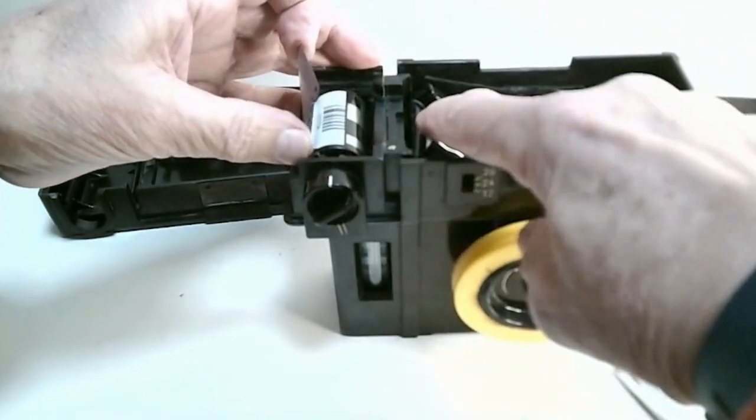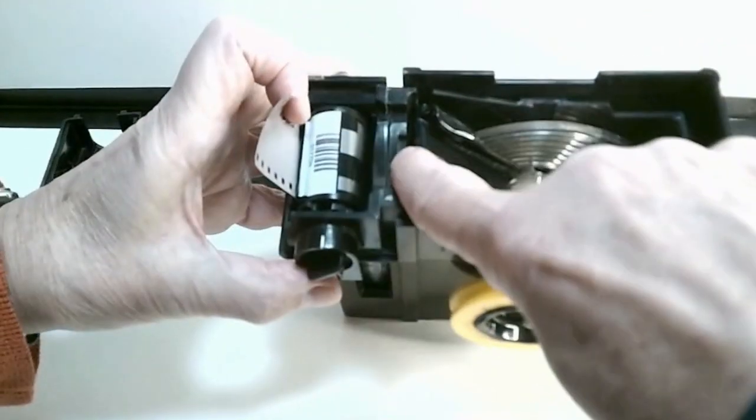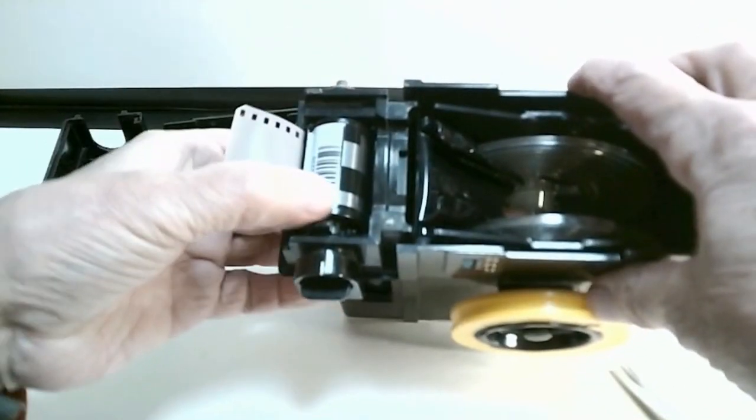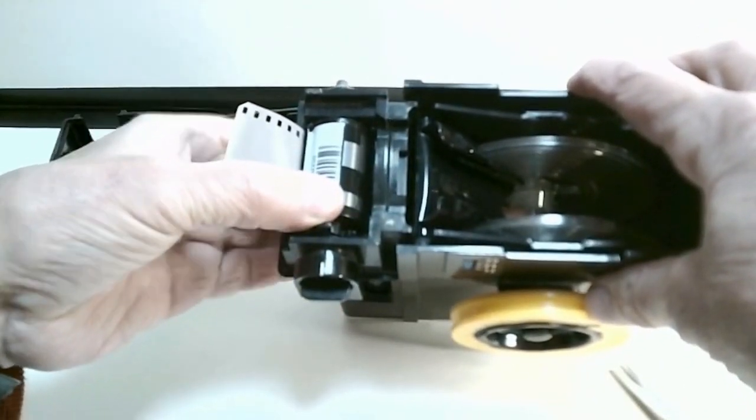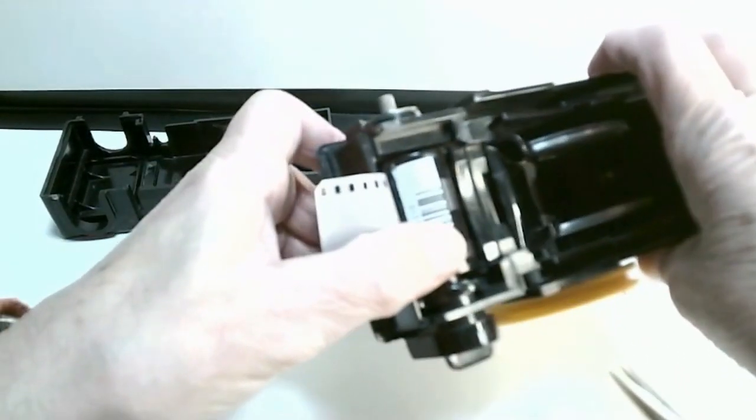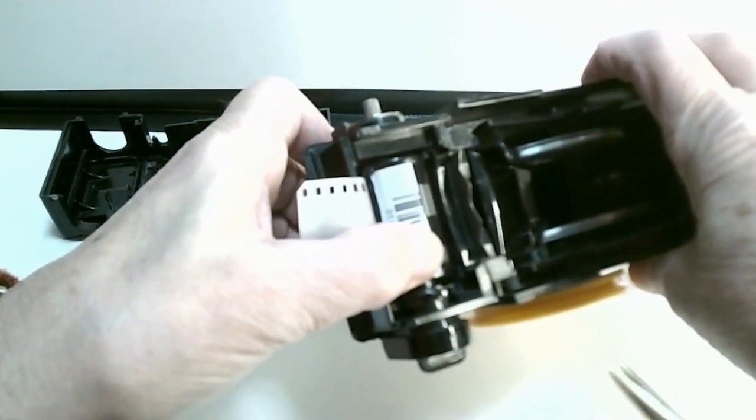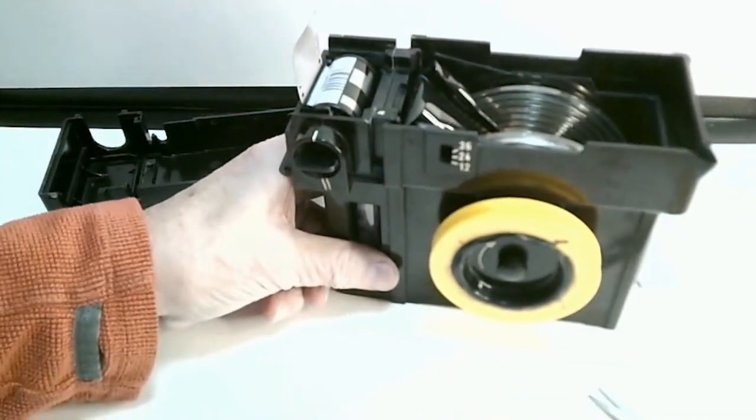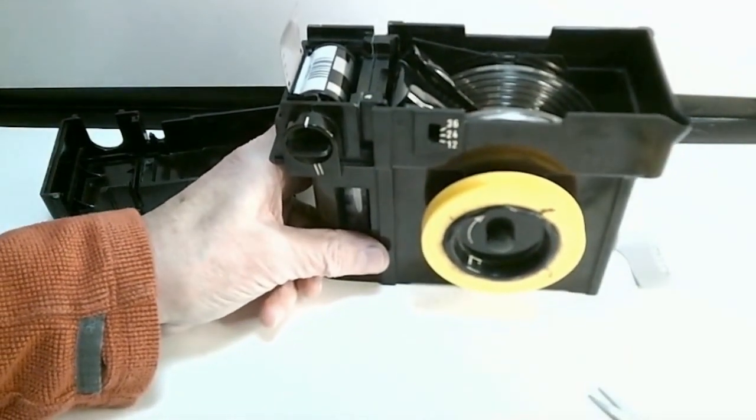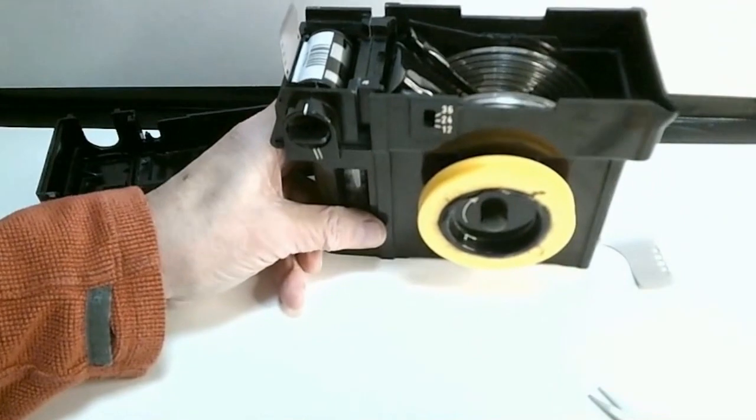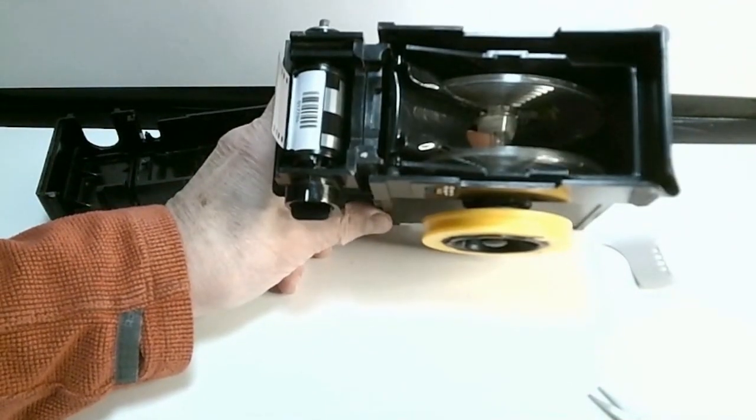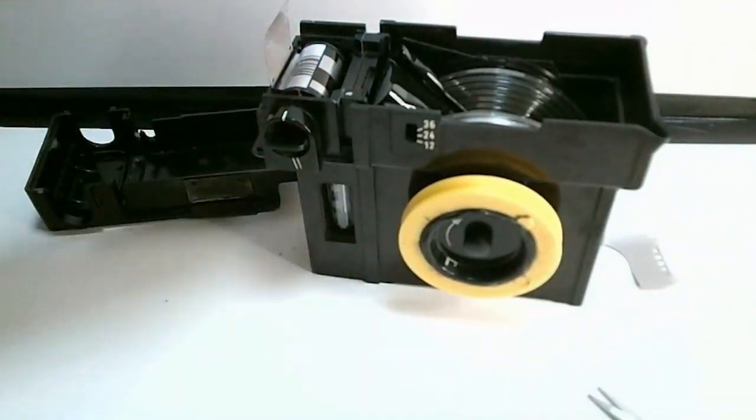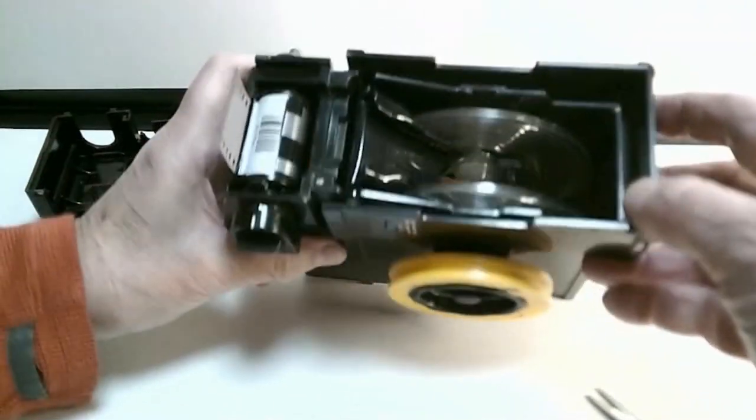And if you notice here there is a slot which a blade comes up, and once the film is into the spiral of the developing tank that allows us to cut it off. So that is basically the process. Obviously once it's in the tank there's not much else to see.